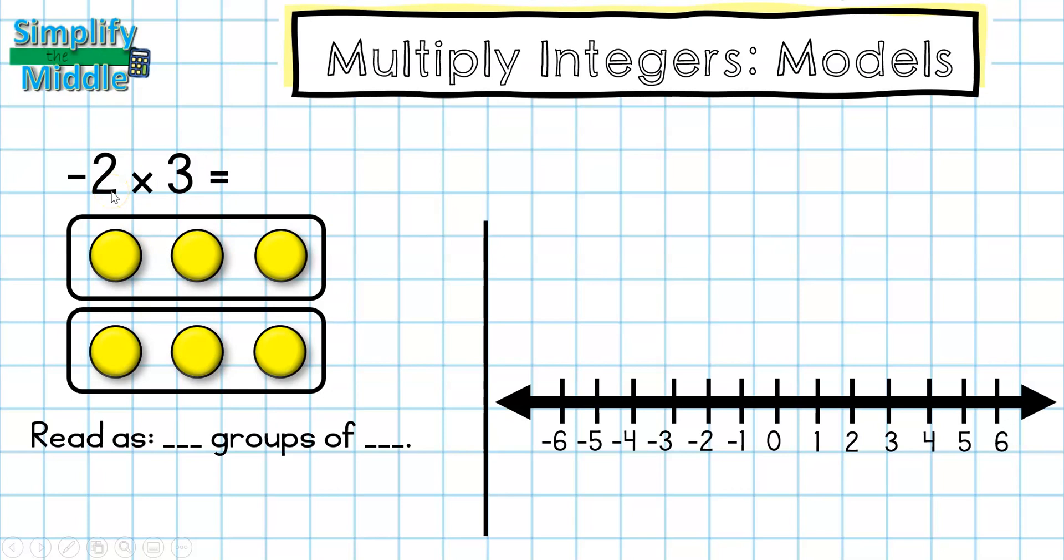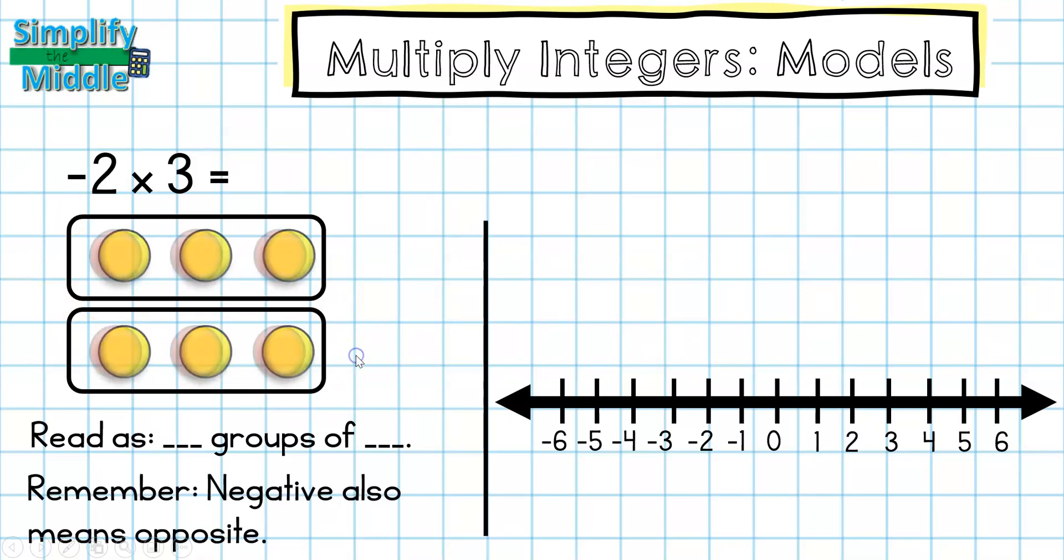What the opposite means is that we are changing the sign. Remember, the opposite of positive 6 is negative 6. So we're actually going to be flipping these over, and then we end up with an answer of negative 6. So once again, the reason why is that we wanted the opposite of two groups of positive 3, which is two groups of negative 3, or negative 6.